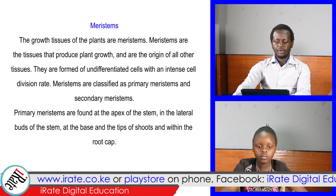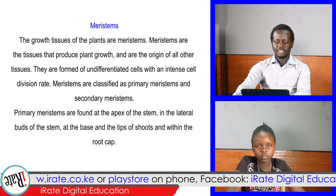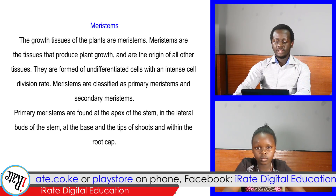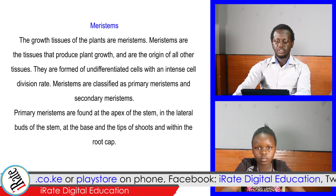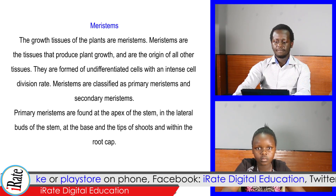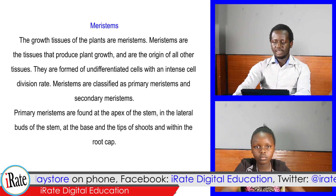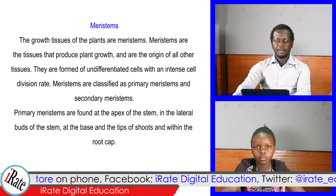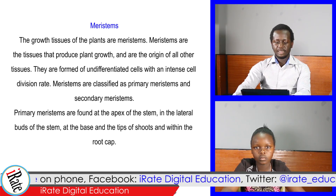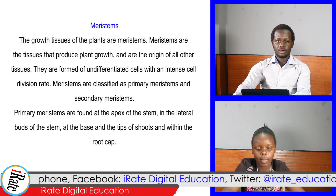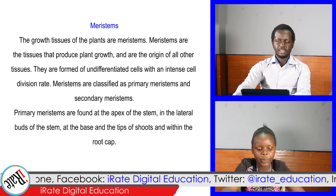They are formed of undifferentiated cells with an intense cell division rate. Meristems are classified as primary meristems and secondary meristems.